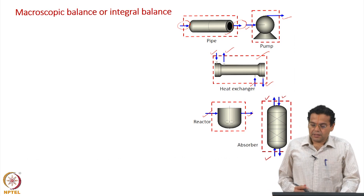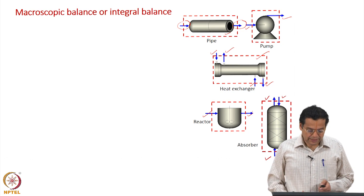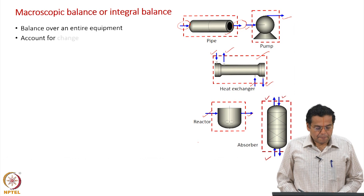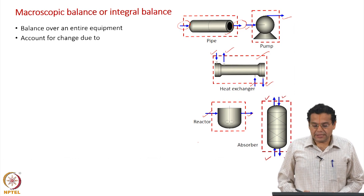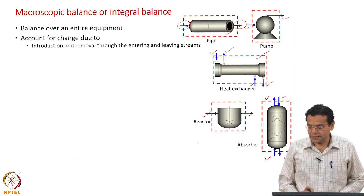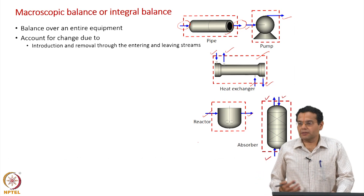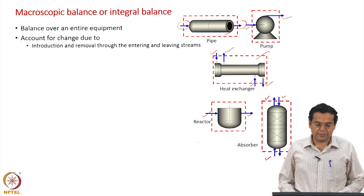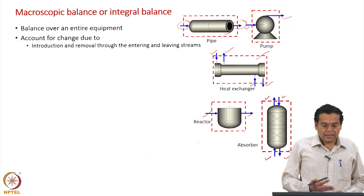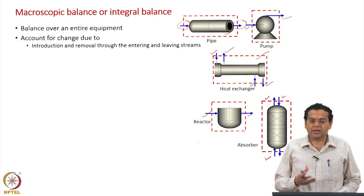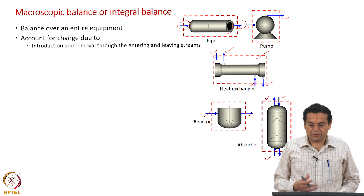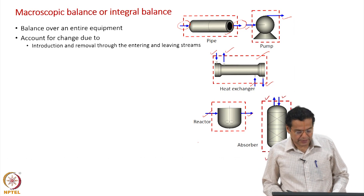In all these cases we do not focus on what is inside the equipment — the boundary is drawn around the entire equipment. We account for changes due to introduction and removal through the entering and leaving streams. Not only material but also energy: when you do an energy balance we account for energy as well. So, depending on the balance we do, we account for total mass, species mass, momentum, or energy — a flowing stream contains any of these properties.